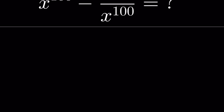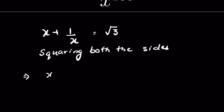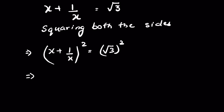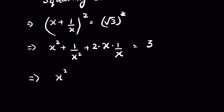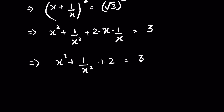We have x plus 1 upon x is equal to square root of 3. Let's square both sides: (x + 1/x)² = (√3)². Using the formula (a + b)² = a² + b² + 2ab, the square root cancels with the square to give 3. The x terms cancel, so we get x² + 1/x² + 2 = 3. Subtracting 2 from both sides gives x² + 1/x² = 1. Let this be Equation 1.